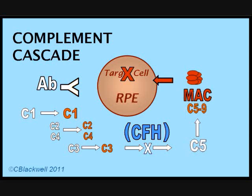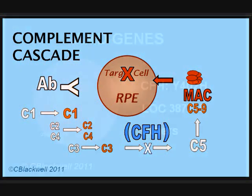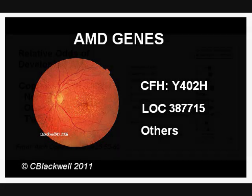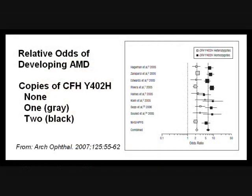It is now suggested that drusen contain debris accumulating from the war of inflammation. The involvement of the complement system and inflammation is a significant new development in our understanding of AMD. Another significant advance is our understanding of the inheritance of AMD. Previously, it was known that the CFH gene was connected to AMD, but not why or how. Now it's clear that there is a defective form of the CFH gene identified as Y402H that is allowing the complement system to attack.